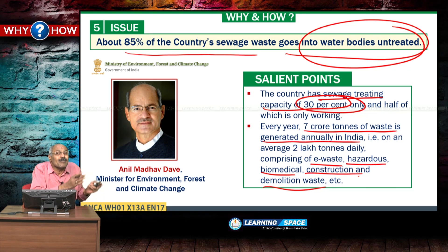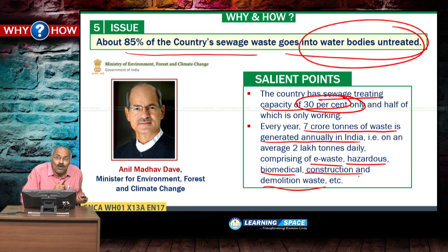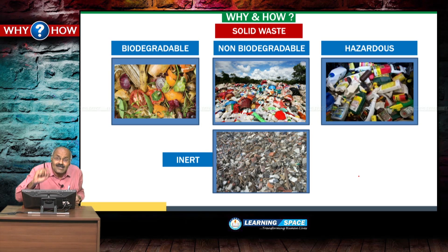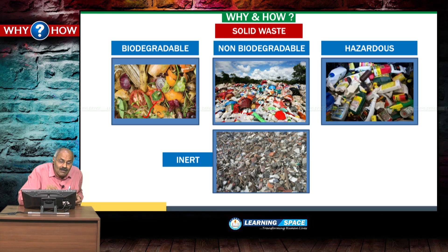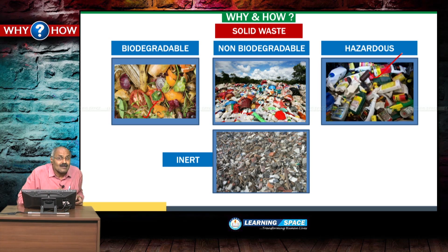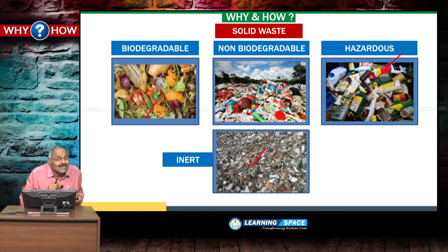Sewage treatment needs to be taken up on a war footing. The second important point is the disposal of waste. Waste can be bifurcated into biodegradable — such as vegetable waste — non-biodegradable — such as various types of plastics — hazardous waste, and inert waste like building rubble. India needs immediate plans for both sewage treatment and proper disposal of waste.